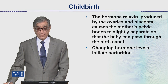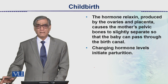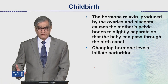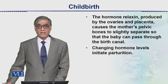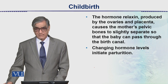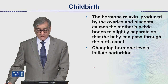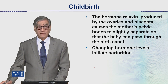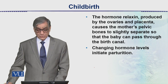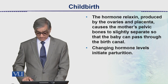Relaxin, produced by the ovaries and placenta, causes the mother's pelvic bones to slightly separate so that the baby can pass through the birth canal. Changing hormone levels initiate this parturition.